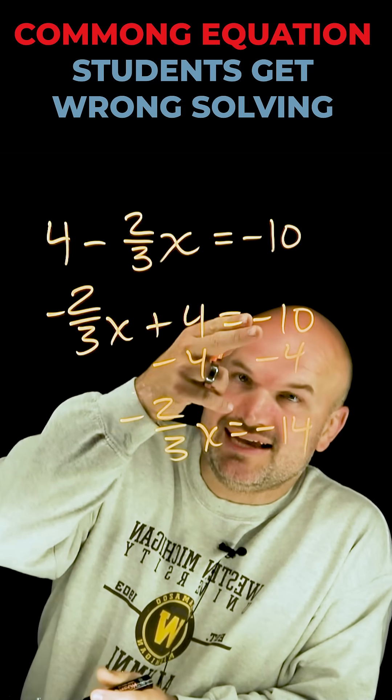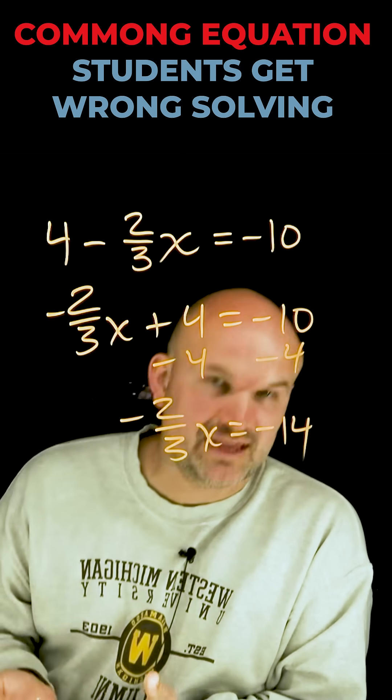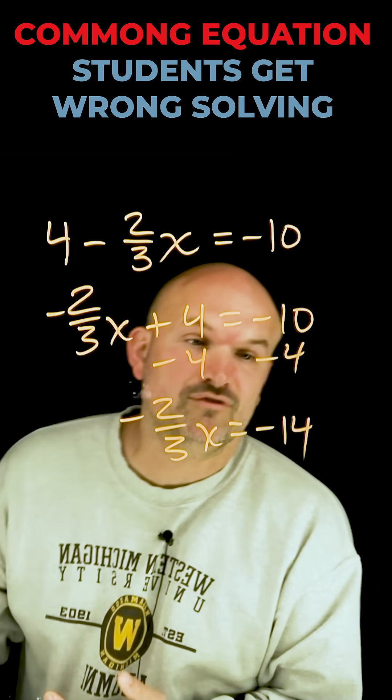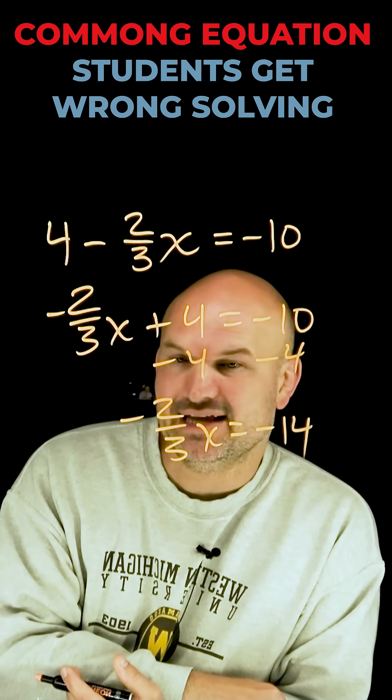Now remember, when you have a negative and you're subtracting 4, think about it like money. You owe me $10, you borrow 4 more, you now are going to owe me negative 14.